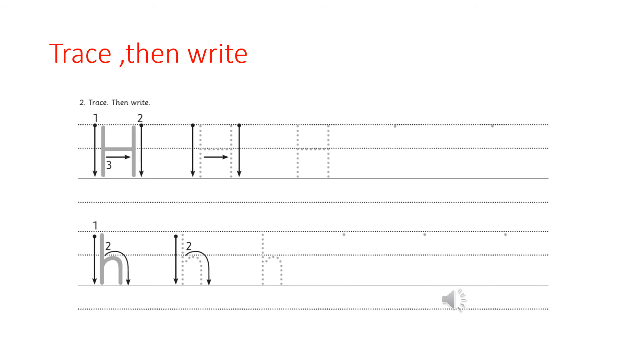Trace then write. Capital H. Start from the top, draw a line down. And then go back to the top and draw another line down. And then go to the middle and draw a line across.